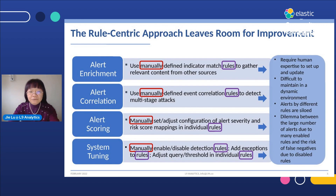Because alerts produced by different rules are presented in silos, security analysts have to manually make the connections among them during alert triage. Another issue is the difficulty of achieving a balance between detection coverage and alert quantity. A larger number of activated detection rules provides better coverage but increases alerts and false positives, while a smaller number reduces alerts but may leave real threats undetected, increasing the risk of false negatives.